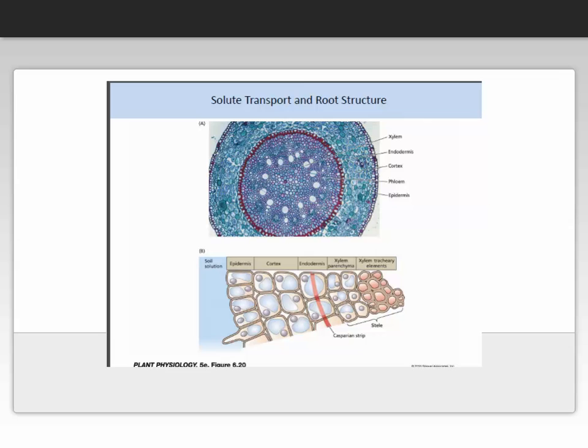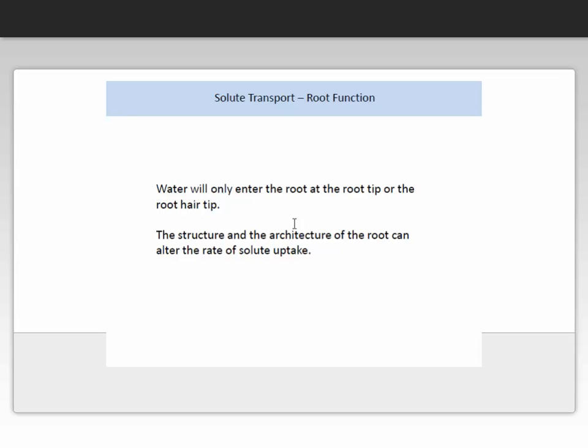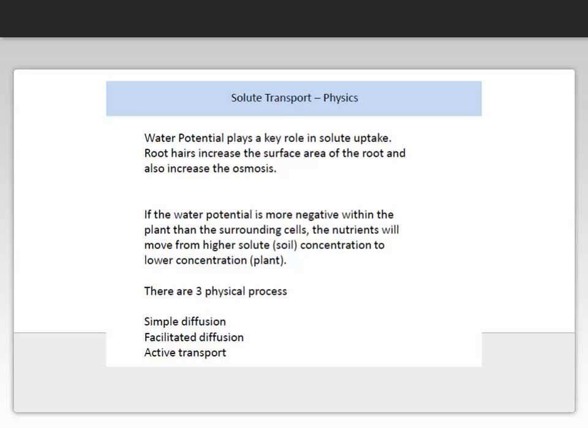Here we have an image of a root structure. From this root structure you can observe the xylem, the phloem, the endodermis, and the cortex, which is the area between the endodermis and the epidermis. In figure B you can see how the Casparian strip is located in the endodermis, and this prevents molecules going back out of the root. Water will only enter the root at the root tip or root hair tip. The structure and architecture of the root can alter the rate of solute uptake. In the practical we are going to look at the architecture and compare monocots and dicots.